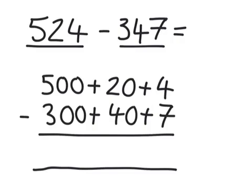Once again, we start with the units. So, 4 take away 7. If I had 4 fingers and I tried to take away 7, that would not be possible.